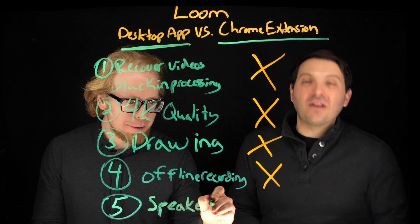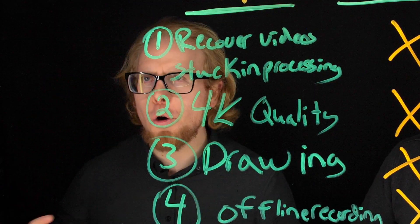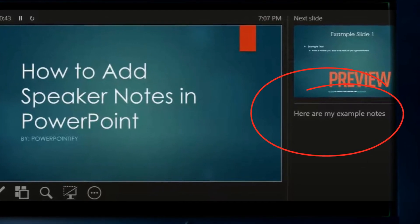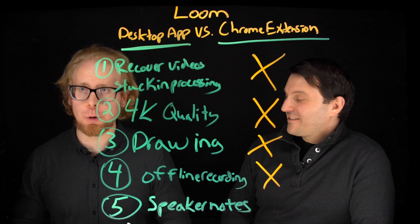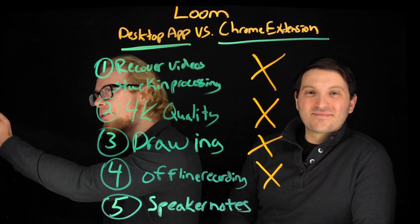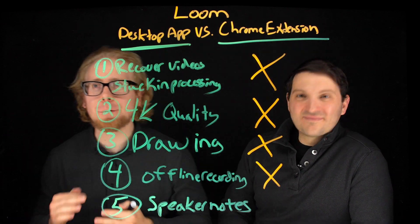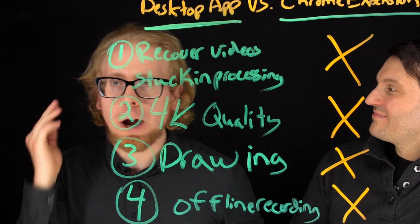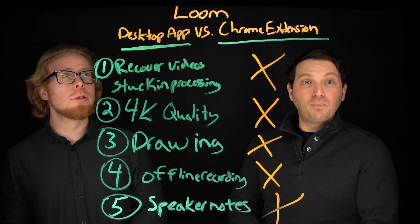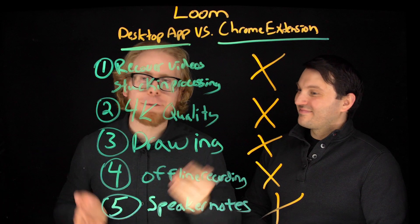Speaker notes is a huge feature that will really help you as you're developing multiple pieces of content. You know how when you're giving a PowerPoint presentation you can have notes that only you see? It's the same thing with Loom. Without speaker notes, you can really only see what you're recording on screen, so you may be looking in another direction. With speaker notes, you can have notes on your screen that aren't being recorded, so you can look at your audience naturally. But if you're using the Chrome extension, you don't get them.